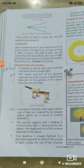Some characteristics have been given here point-wise, I am going to tell you about that. A shadow is always dark and is formed only when there is a bright light. The shape and size of the shadow depend upon the source of light, it also depends on the position of object from the source of light.